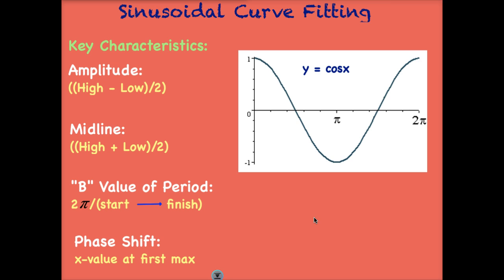Let's look at how we would do this. This is just a parent function but we can use this to help us determine how to find these key characteristics when we are curve fitting. How do we find the amplitude? Well the amplitude is always our high minus our low divided by 2.